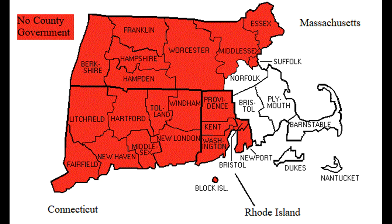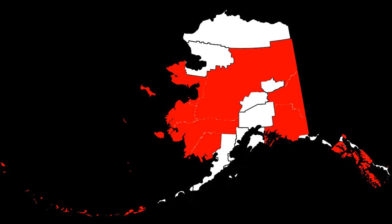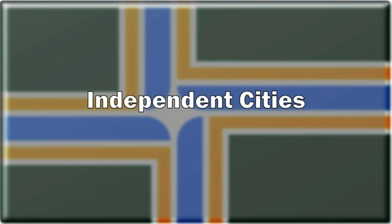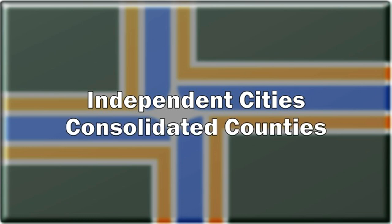In Alaska, there's a region called the Unorganized Borough, which has no county-level government and is larger than 162 countries. There are also some cities that have gone all Game of Thrones on their county governments, like independent cities, which have broken free from their counties and have no county government, and consolidated counties, where the county-level government has fused with the city government to become a single government with the powers of both a county and a city under state law.